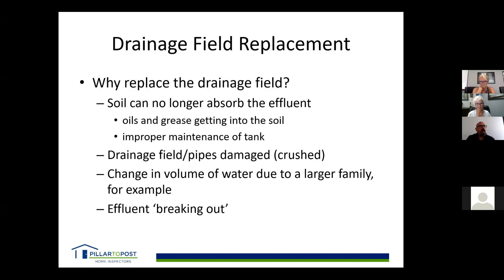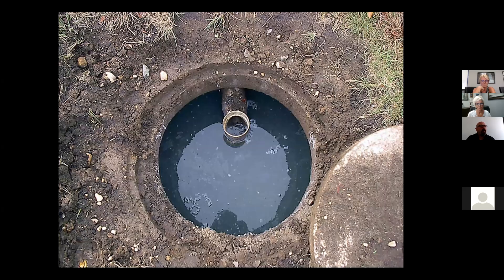Looking at the top of the tank — this one is fairly clean. You can see the baffle here; water comes in and this is open in case of too much water. The level in the tank should remain consistent. If you're seeing the level go full, then two inches lower, then full again, it indicates either large quantities being dumped in quickly — which is bad — or the system is starting to plug out.